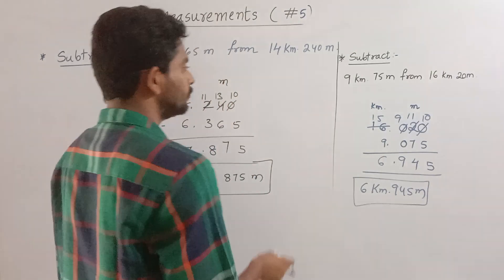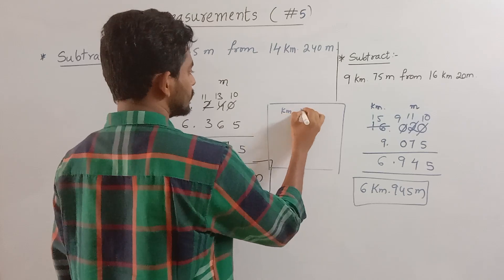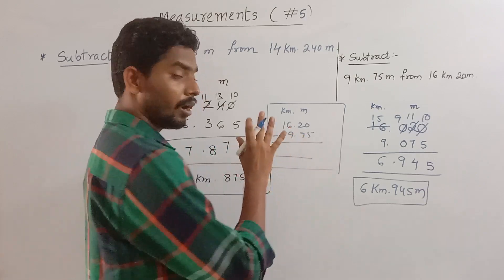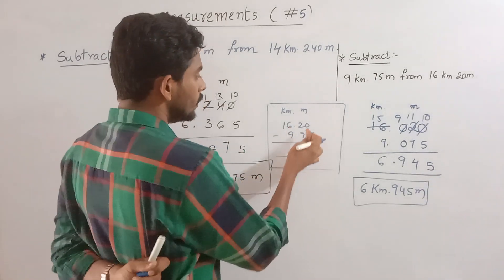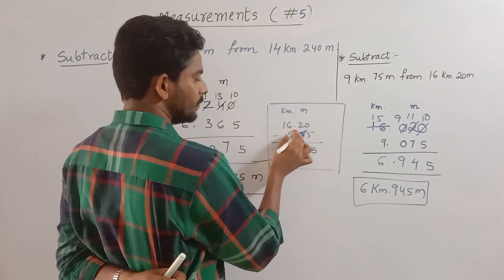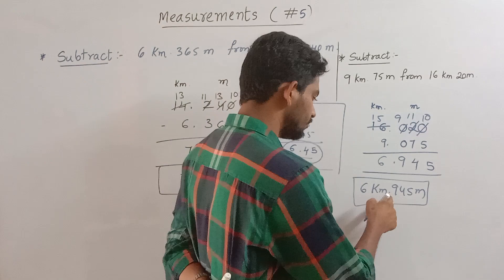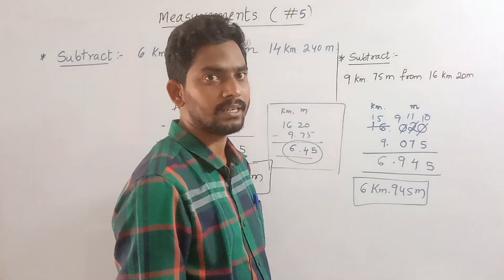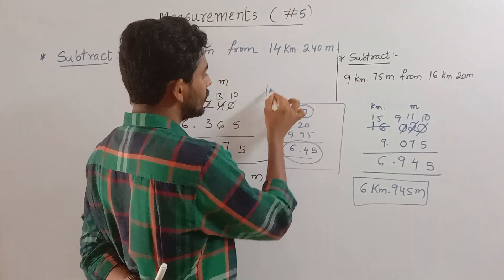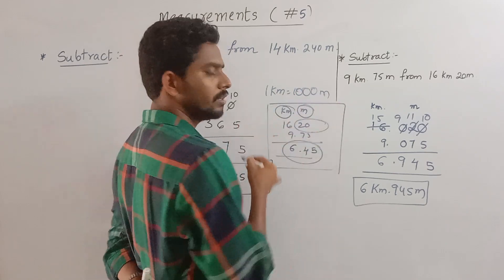That is correct. We are going to show the working here. We subtract 9. We take the opposite: 0 and 5, then 5 is 5. With 11, 7 gives 4. With 15, 9 gives 6. My answer is 6 km and 945 m. We place the decimal point 3 places, since 1 kilometer equals 1,000 meters.